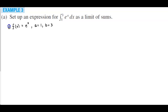Now we need to find delta x. Remember that delta x is going to equal b minus a over the value of n. So we're going to have 3 minus 1 over n, which is equal to 2 over n.